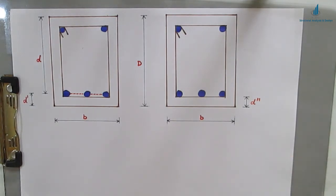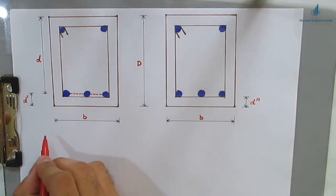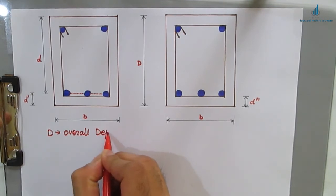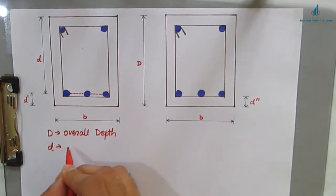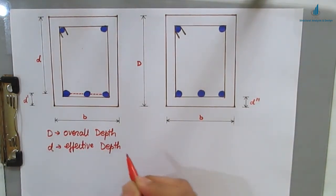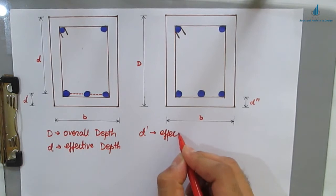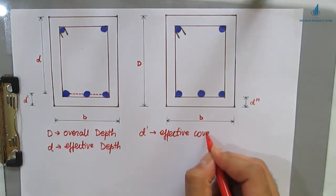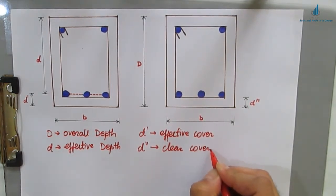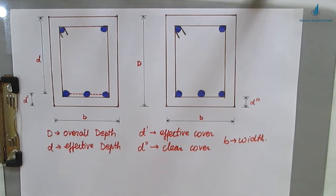For calculations, in analysis or design, we always take effective cover. To summarize the notation: D is your overall depth, small d is your effective depth, d dash is effective cover, d double dash is clear cover, and b is the width of the beam.